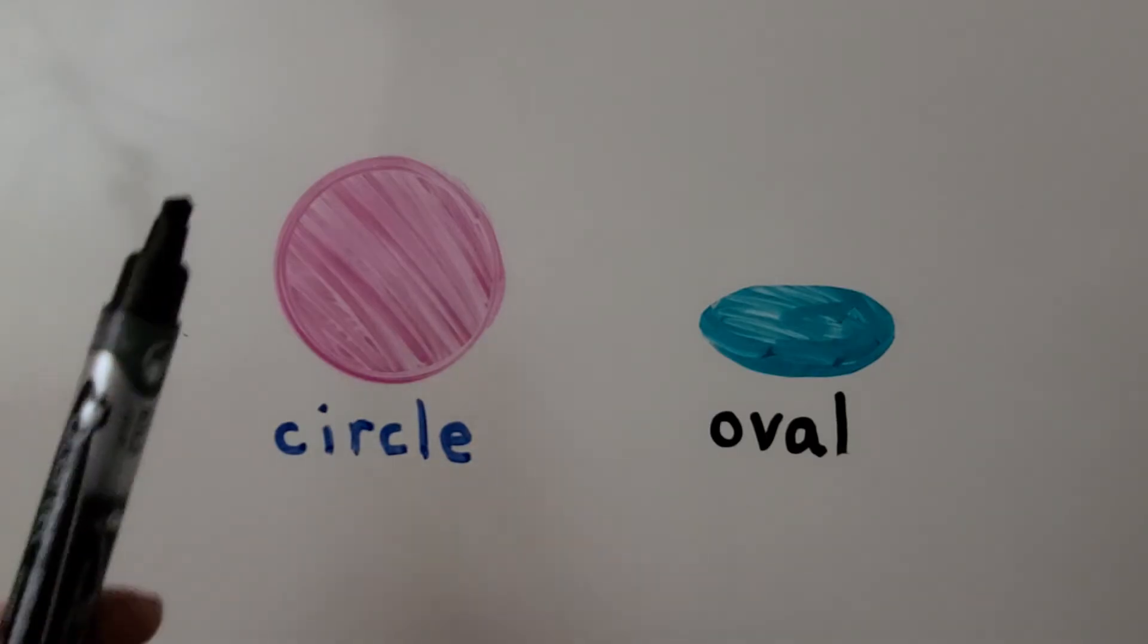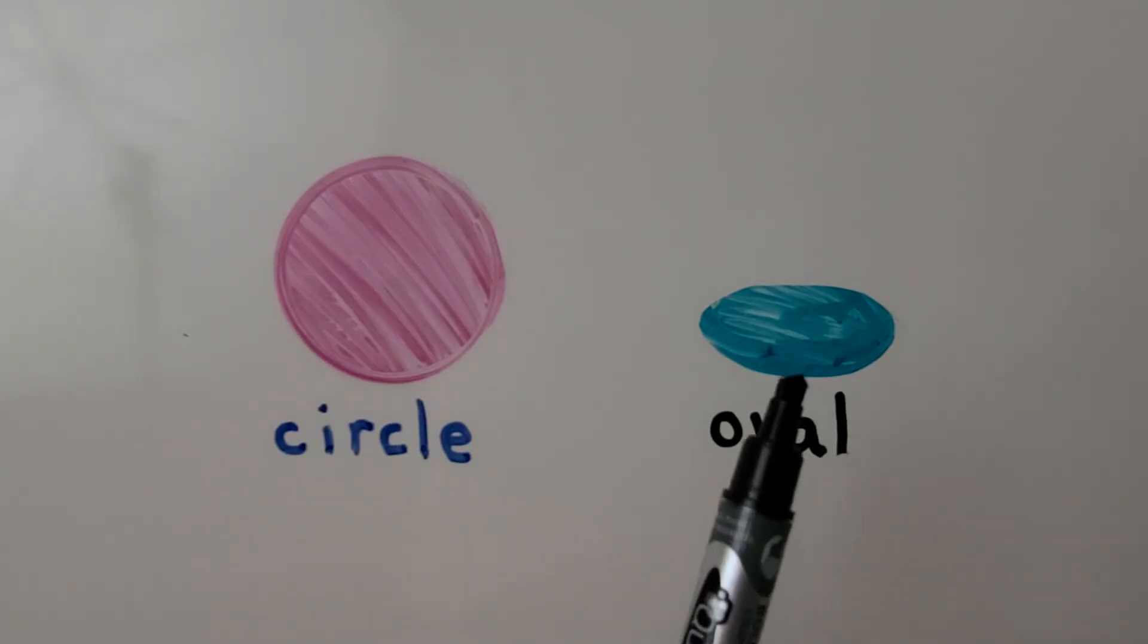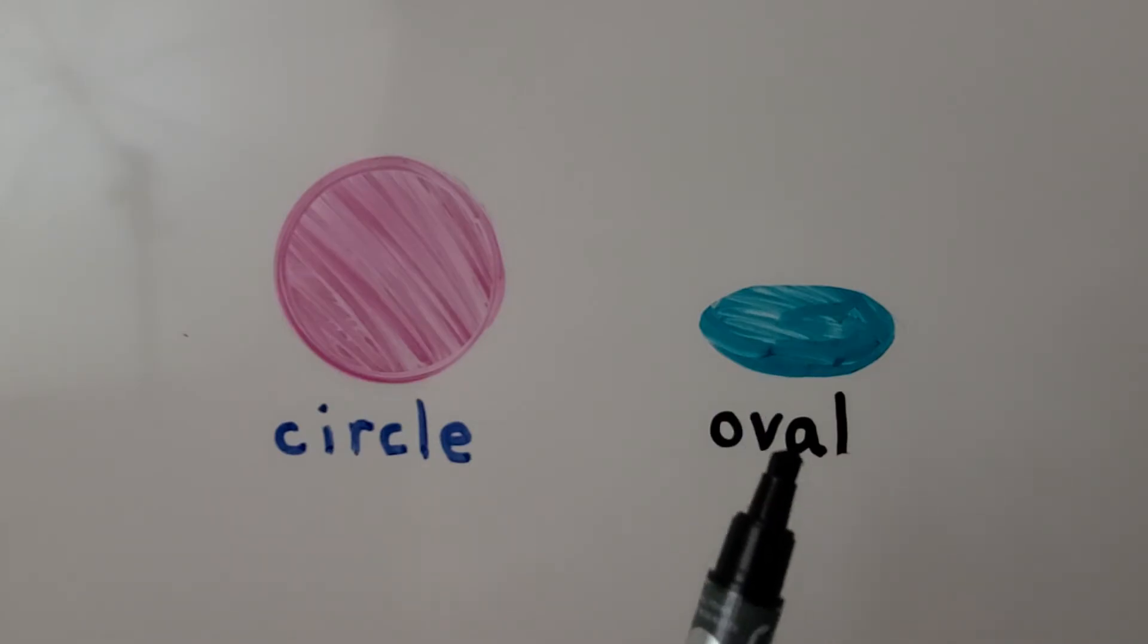A circle is round and flat. This shape looks like a stretched out circle or a squashed circle. It's not a circle. It's an oval.